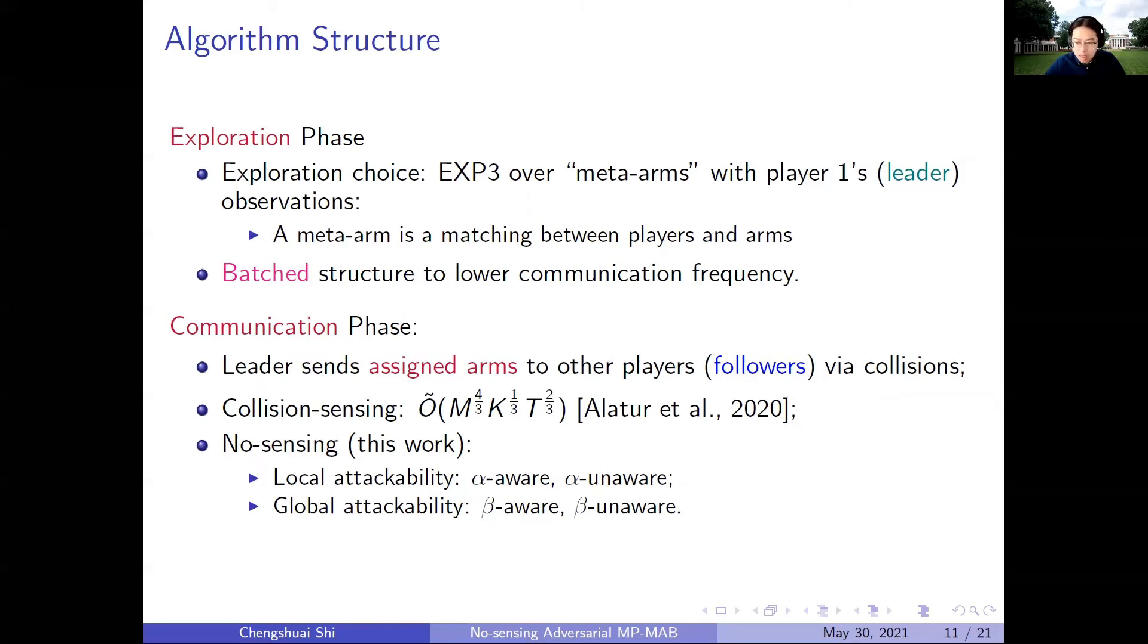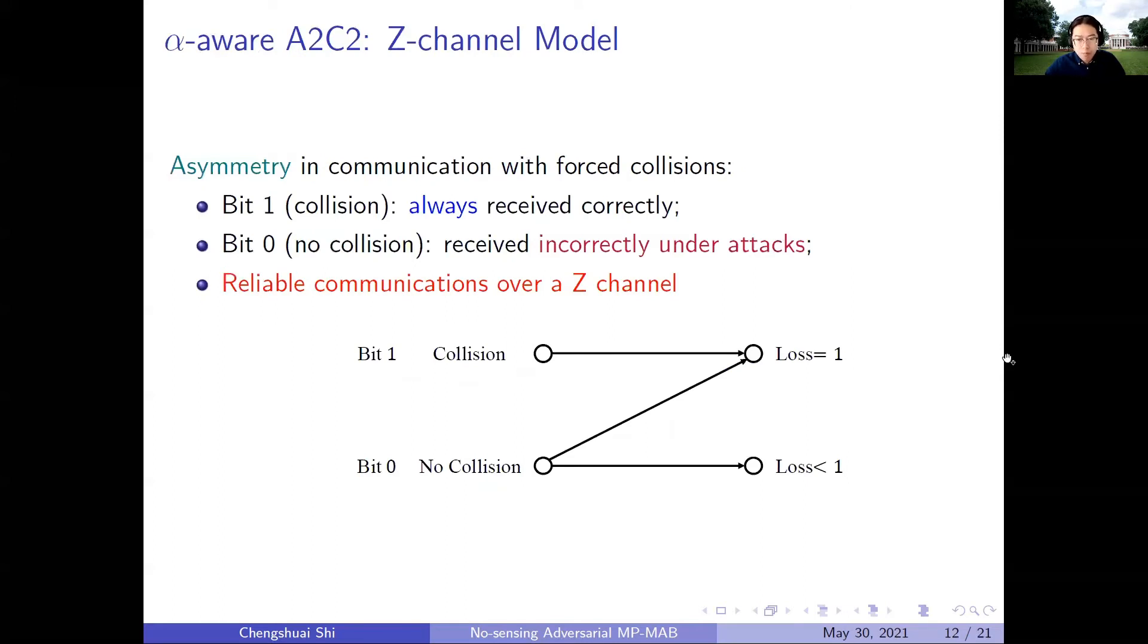Especially, we propose four kinds of A2C2 algorithms, and each of them are under a different scenario. Namely, the α-aware and α-unaware A2C2 will focus on local attackability. The β-aware or β-unaware A2C2 will focus on global attackability. First, let's talk about the α-aware A2C2, which is the most simple one, but it contains the basic structure of A2C2 families. In this one, we assume that the players have knowledge of α. The first important component is that we notice there exists asymmetry in the communication with forced collision. First, in the no-sensing setting, bit 1 is transmitted by collision, and it can always be perceived correctly. However, on the other hand, bit 0, which is transmitted by no collision, can be attacked.